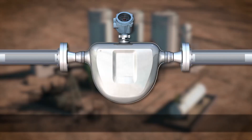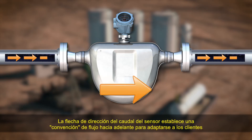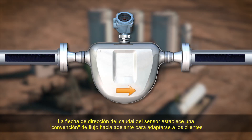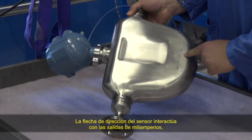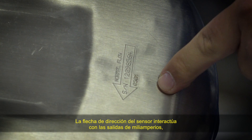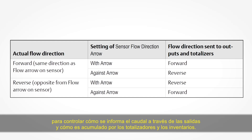The sensor works equally well with flow in either direction. The sensor flow direction arrow establishes a convention of forward flow to accommodate customers who need to define forward and reverse flow for process purposes. The sensor flow direction arrow interacts with milliamp outputs, frequency outputs, and totalizer direction to control how flow is reported by the outputs and accumulated by the totalizers and inventories.